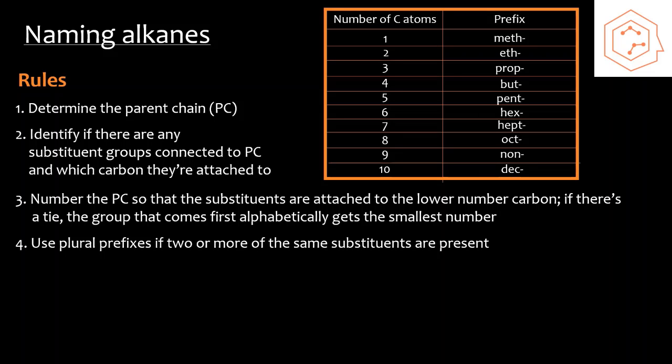Fourth, when naming, you're going to want to use plural prefixes if there are two or more of the same substituent present. Fifth, when assembling the name, you want to list all the substituents and their carbon numbers first, and these groups are going to be arranged alphabetically. If there's a plural prefix, just ignore that prefix and focus on the first letter of the actual substituent group. This won't always correspond to the numerical order, but that's fine. You're going to want to stick with the alphabetical order.